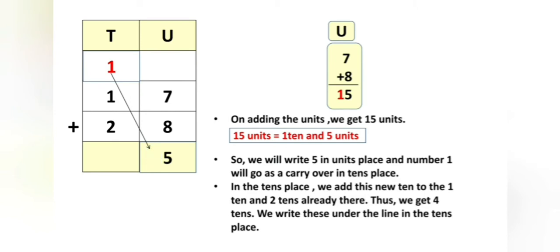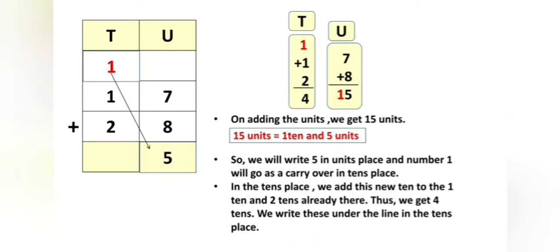Okay children, now in the tens place, we have 1 ten and 2 tens already there. And 1 new ten has joined this tens place. So let us add: 1 plus 1 plus 2 is equal to 4. We get 4 tens. We write these under the line in the tens place.